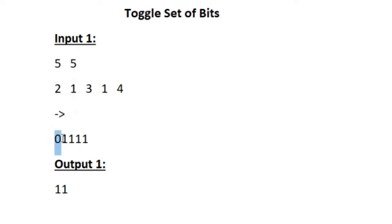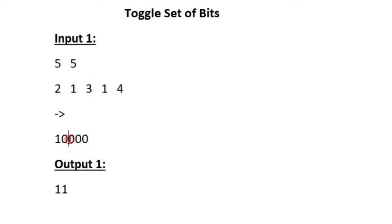The second integer is 1, so from the first index we have to toggle all the bits. The first 0 will be updated to 1 and all the remaining 1s will be updated to 0. Now the third integer is 3, so from the third index we have to toggle our bits. The last three zeros are the bits, and all those zeros will be toggled to 1.